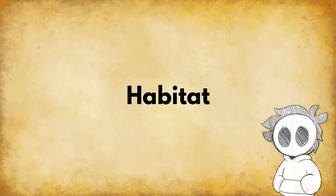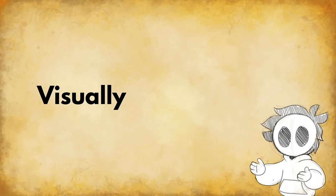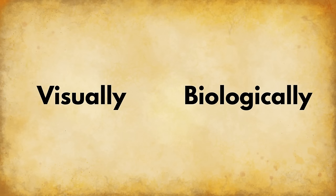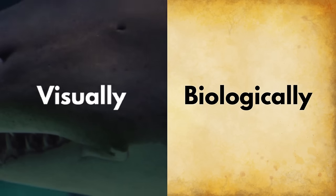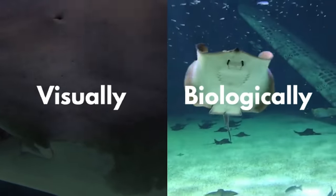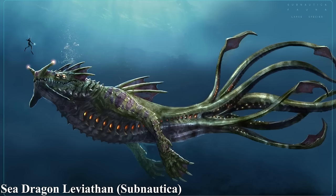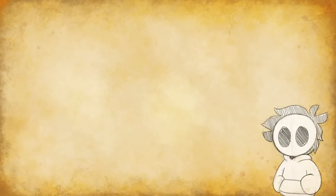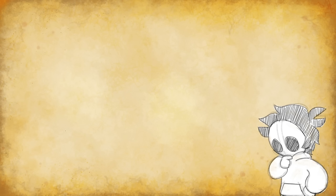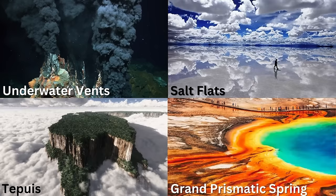Next up: habitat. Consider where your animal lives — is it hot, cold, underwater? A habitat will influence your creature's traits and give it a space to feel alive rather than being a blob in an empty void. It also sets visual and biological limitations. For example, marine animals have countershading — darker on top, lighter on bottom — for camouflage. When starting out, it's better to pick an existing environment rather than creating your own, as extremely unique habitats already exist in nature.